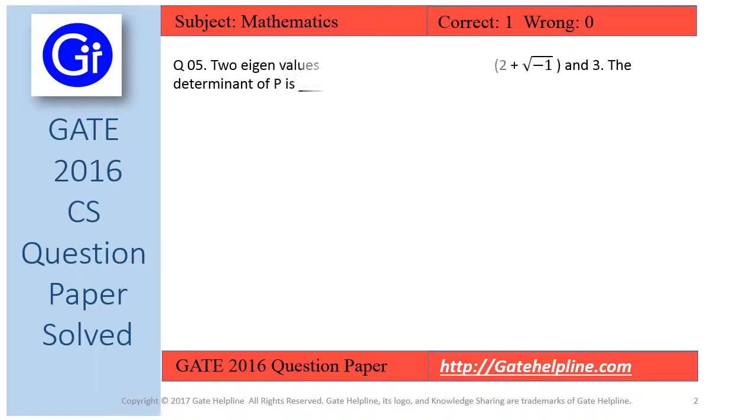Question number 5 is: the two eigenvalues of a 3 × 3 real matrix P are 2 plus under root minus 1 and 3. The determinant of P is dash.